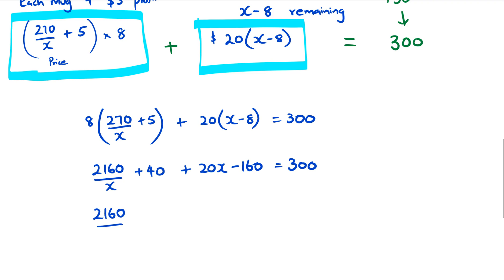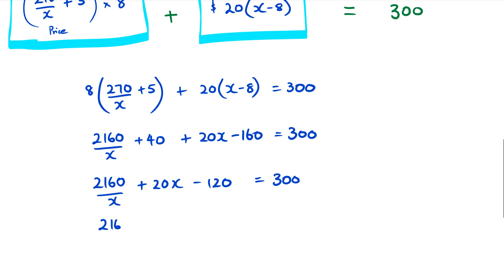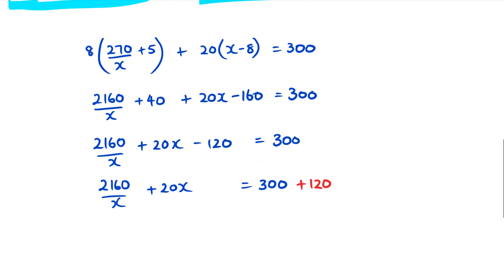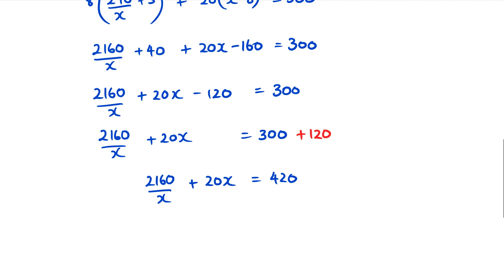Getting rid of the numbers on the left-hand side, I get -120, so that equals 300. Taking -120 to the right-hand side gives 300 + 120. It's starting to form a quadratic equation: 2160/X + 20X = 420. Now I want to get rid of the X in the denominator.